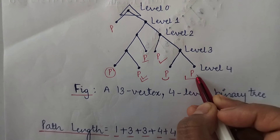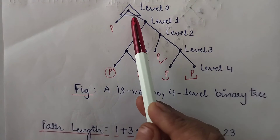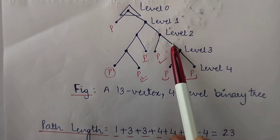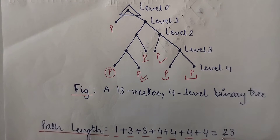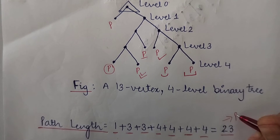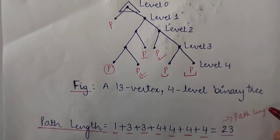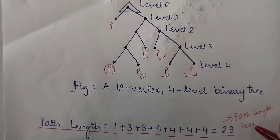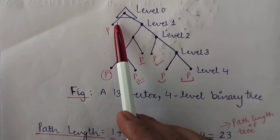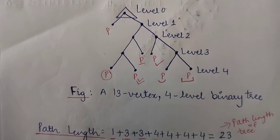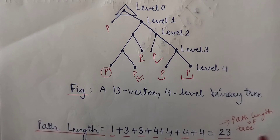The last pendant vertex of this tree also has a path length of 1, 2, 3, and 4. Adding the path lengths of all pendant vertices gives 23. So the path length of this tree is 23. This is how you find the path length of a tree: find the individual path lengths of all pendant vertices and sum them up.